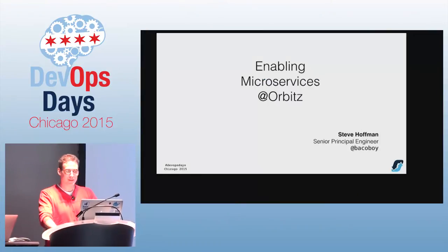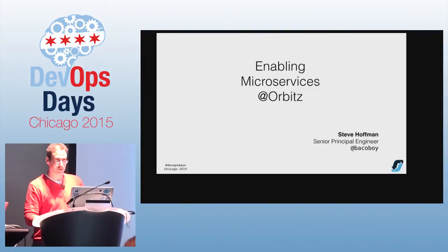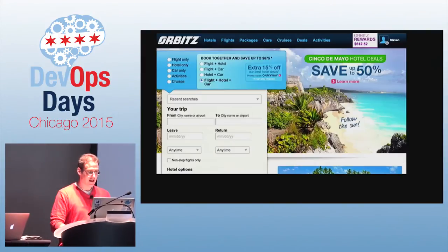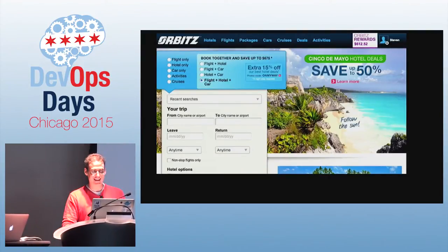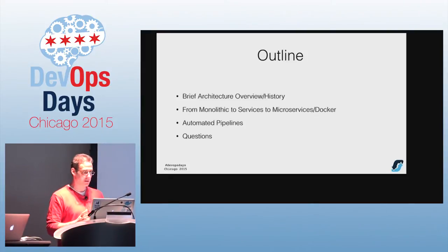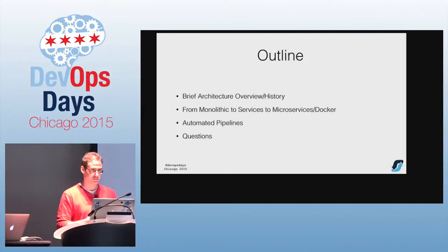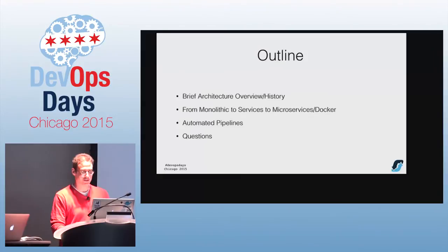My name is Steve. I work at Orbitz, hometown Chicago. Today I'm going to talk about a microservices experiment that we did recently. For those of you that don't know us, we're a travel website. You used us to get in here. I'm going to start with a quick architecture overview and history, talk about how we did a transition from monolithic services to microservices with Docker. And you can't talk DevOps without talking about automated pipelines. Hopefully we'll have questions at the end.